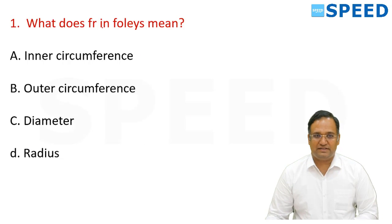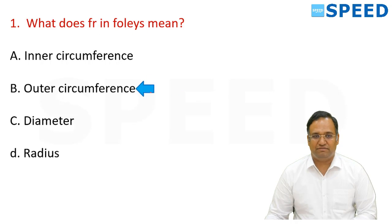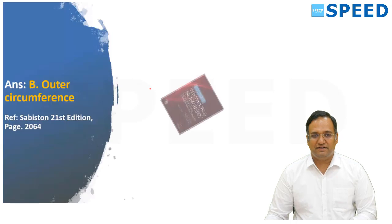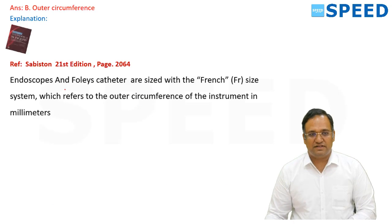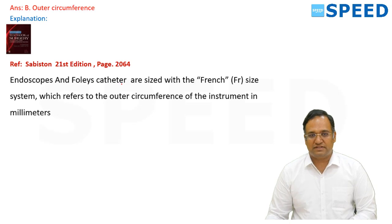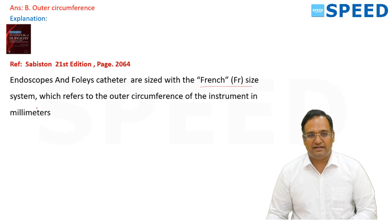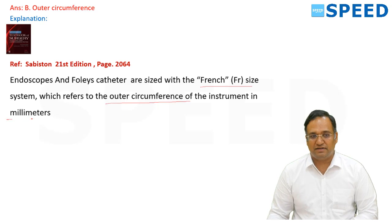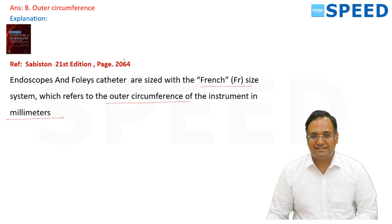The first question was: what does FR in Foley's mean? FR in Foley's refers to the outer circumference. This is given in Sabiston 21st edition, line to line — endoscopes and Foley's catheters are sized in French, meaning the FR size system refers to the outer circumference of the instrument in millimeters. This is very clearly stated on page number 2064.